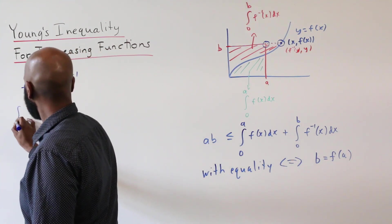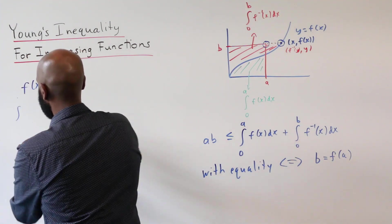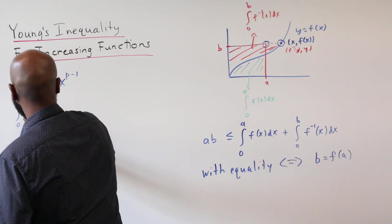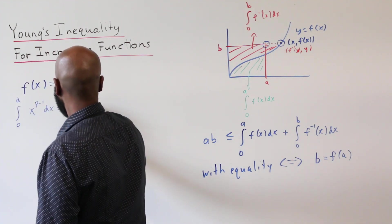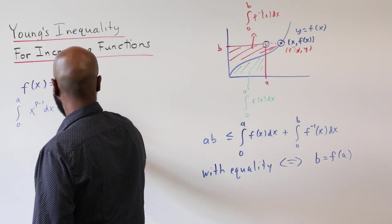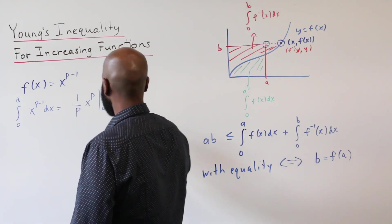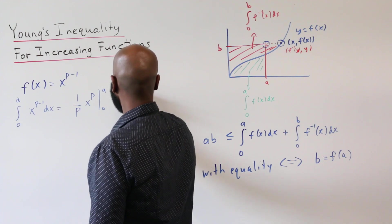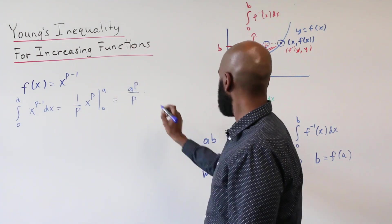If we do that, then the integral from 0 to A of f of x dx is 1 over p x to the p evaluated from 0 to A. At 0, this is 0. So this is a to the p over p. So that's this piece right here.